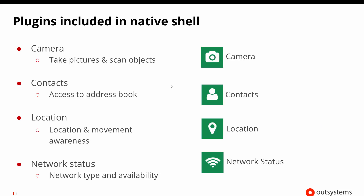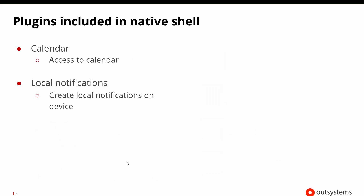There are several of these plugins included inside of what we refer to as the default native shell. There is the camera plugin that can take pictures and scan items, there's the contacts plugin that gets you to the address book, location which gives you where you're located at any given time, and network status — which networks you're connected to and what your current status is on those networks. There's also the ability to access the calendar and receive local notifications from the device, which would let our apps create their own notifications as needed.